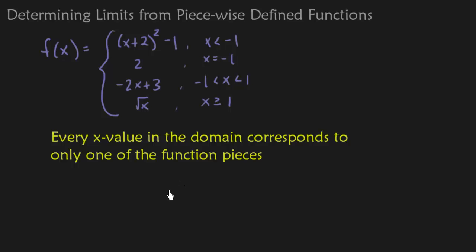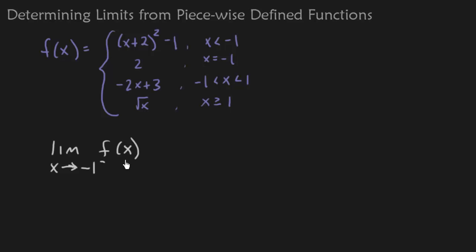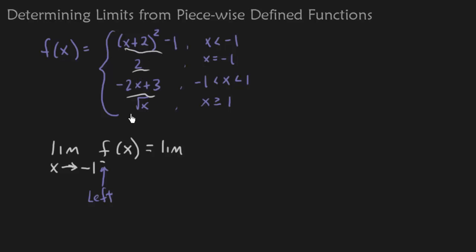Now that we have that out of the way, let's go ahead and find some limits. The first limit I want to focus on is the limit as x approaches -1. Notice I am giving a direction here — I have that minus sign, so that means I am coming in from the left. The crucial part of the problem is: what piece am I using to evaluate the limit?